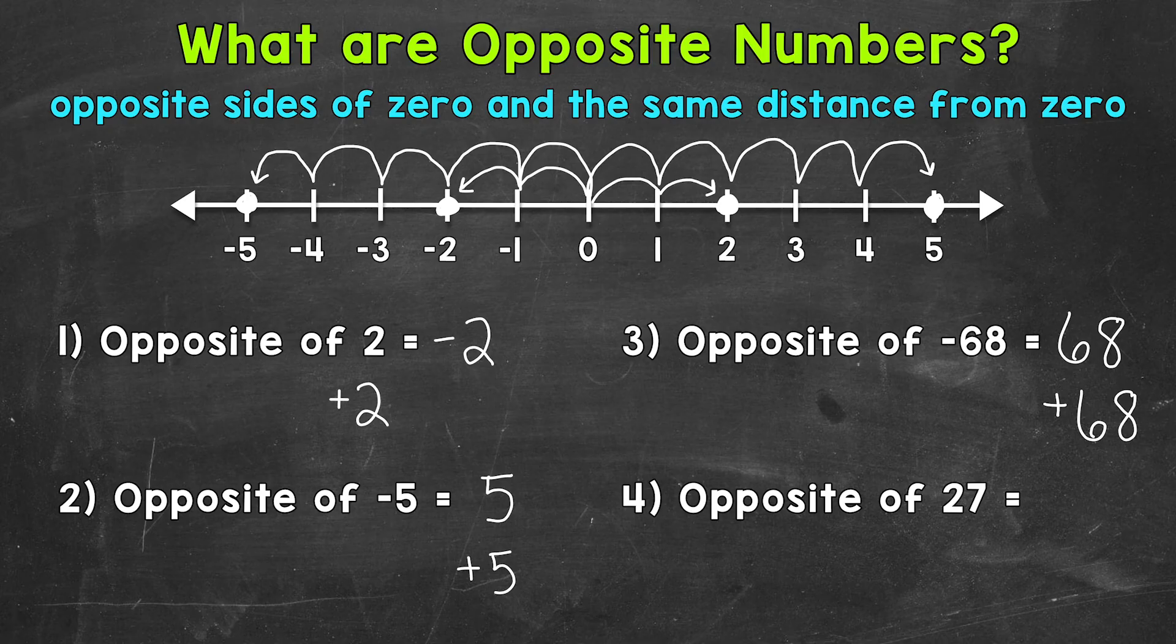Lastly, number four, we have the opposite of 27, which is going to be negative 27.